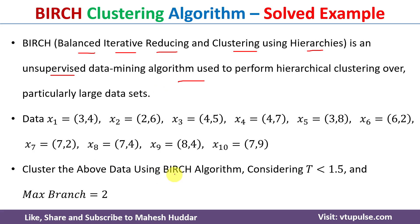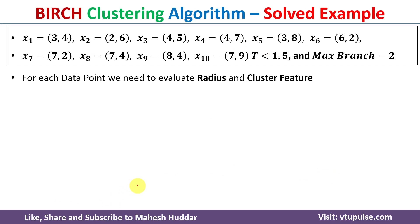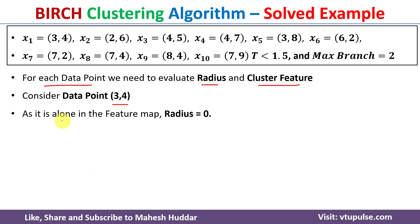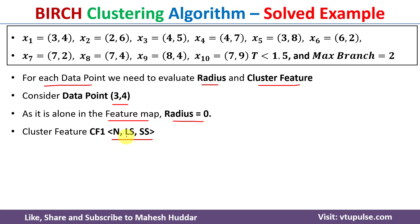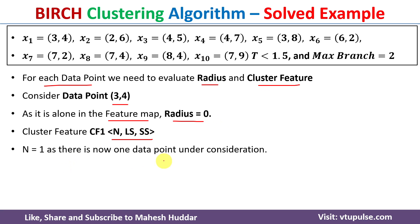We need to apply the BIRCH clustering algorithm on the given dataset with the threshold as 1.5 and the maximum branch equivalent to 2. In BIRCH clustering, we consider each data point and calculate the radius as well as the cluster feature. First we consider the first data point x1 = (3, 4). Since there is only one data point in the feature map, the radius is equal to 0. The cluster feature is a triplet consisting of N, LS, and SS, where N is the number of data points. Right now N = 1.